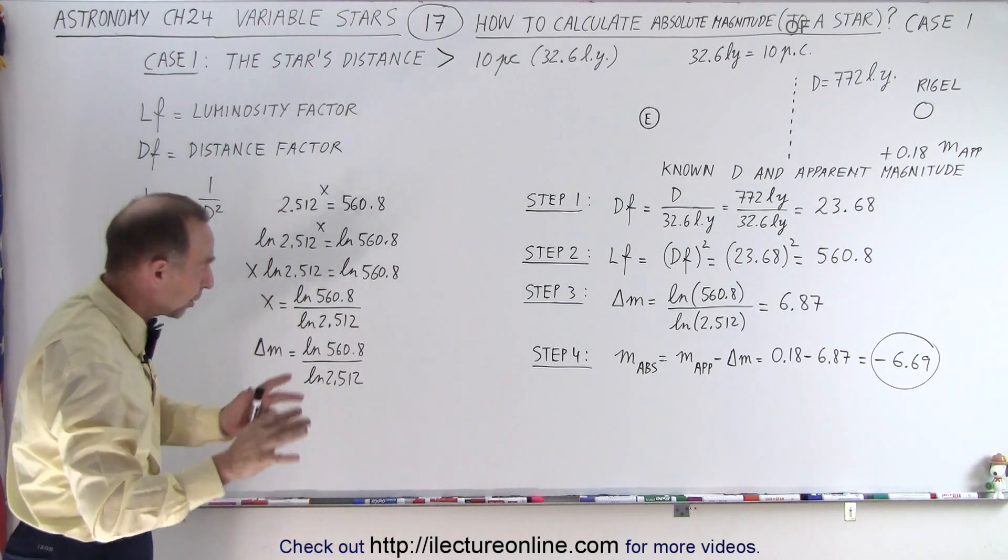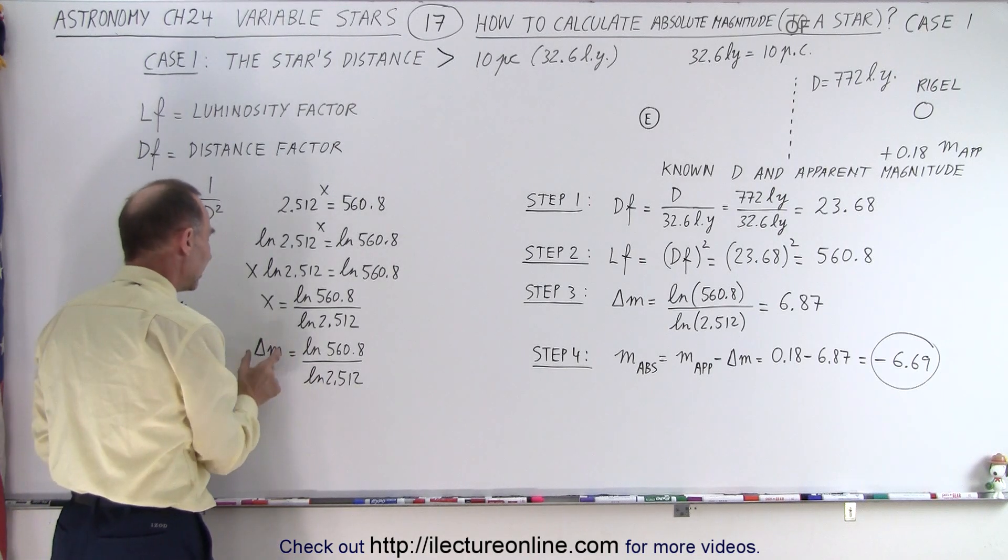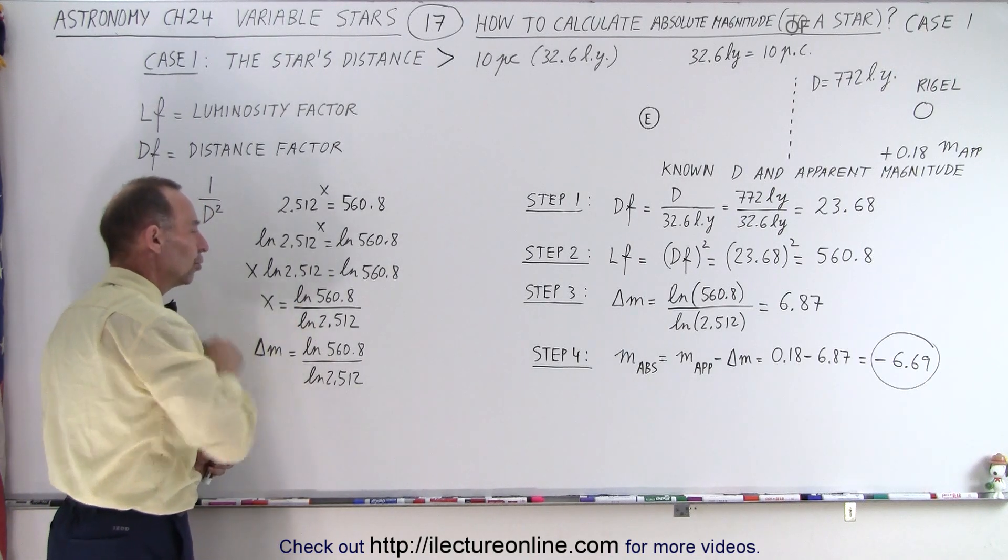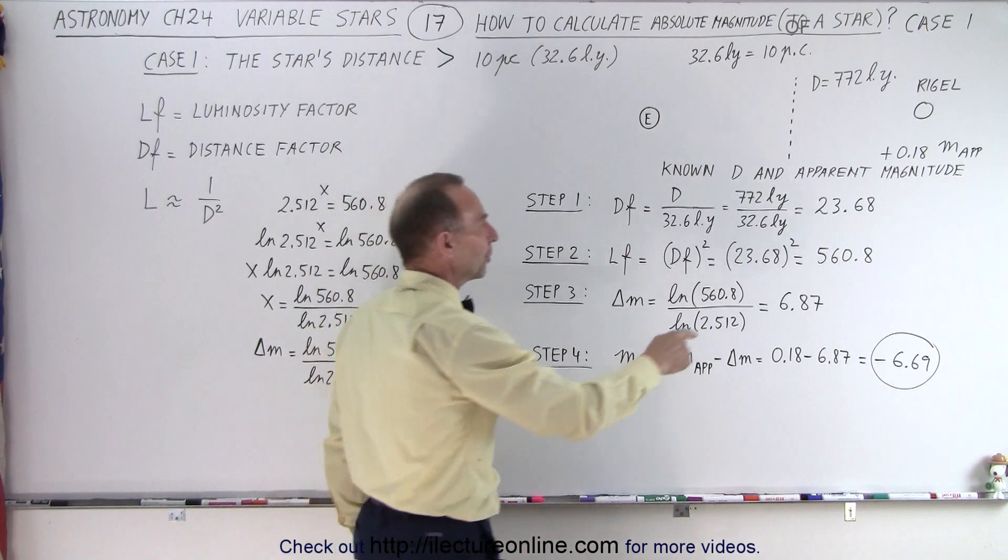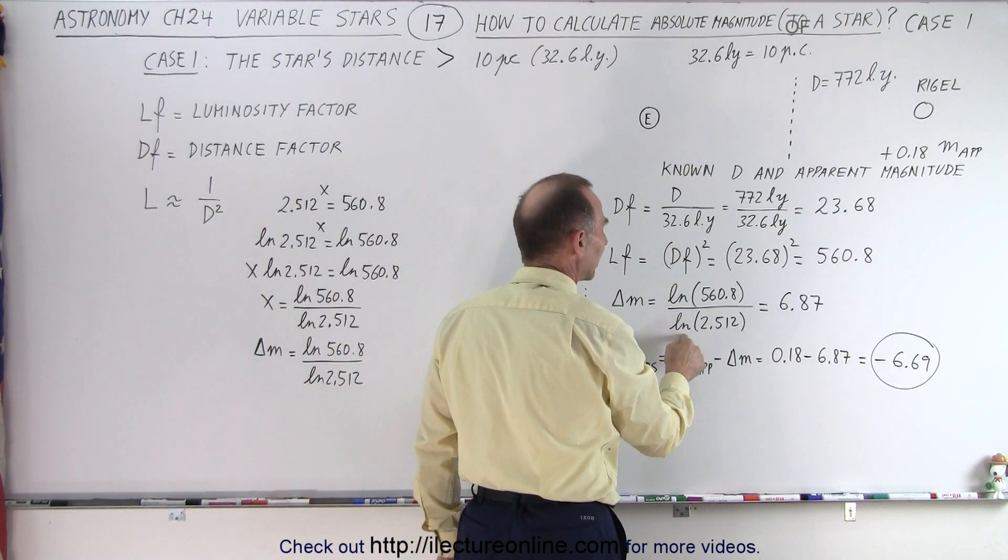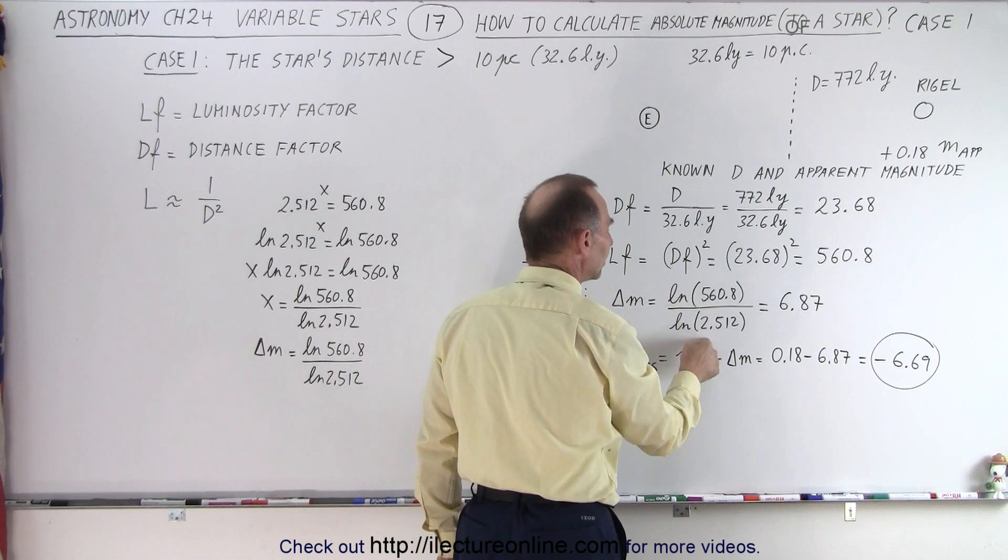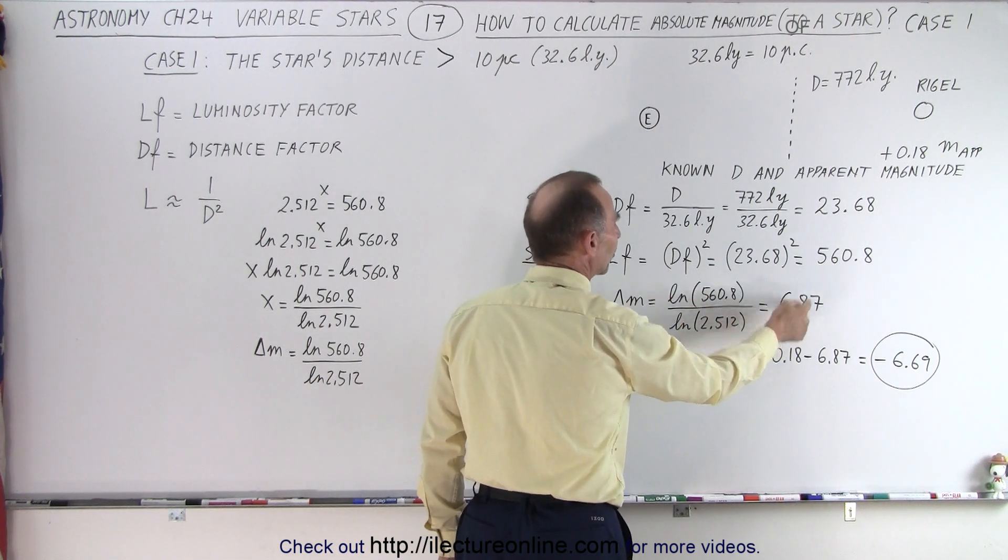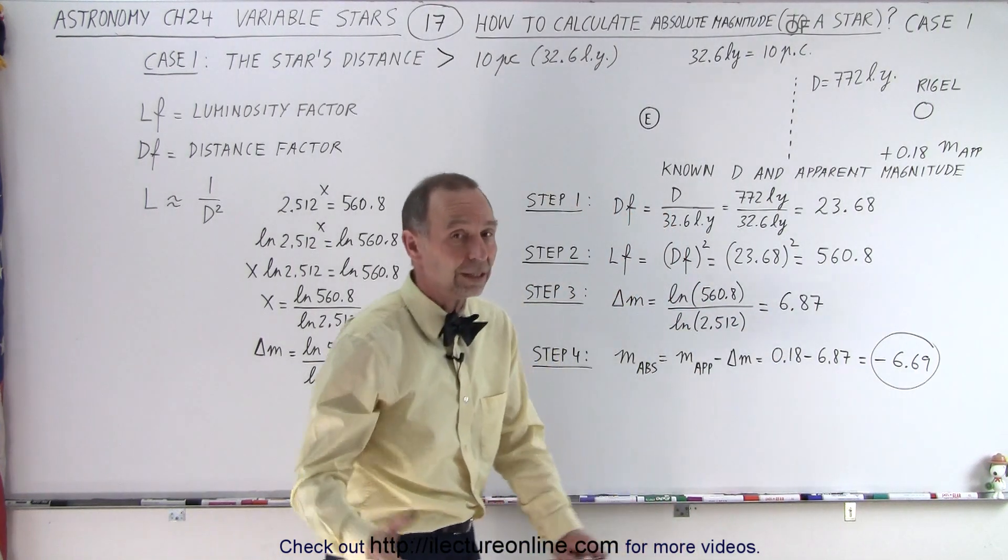If you don't understand that, don't worry about it. Simply, we know that the delta M is simply the ratio of those two numbers. So, we take this number, we take the natural log, we take 2.512, we take the natural log, divide the one by the other, and that's going to be equal to 6.87. You simply use your calculator for that.